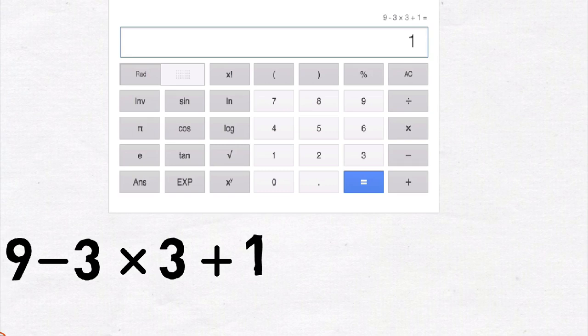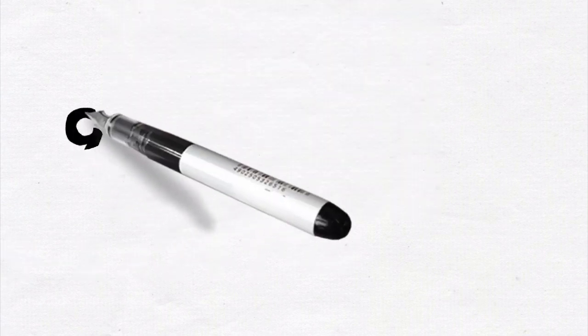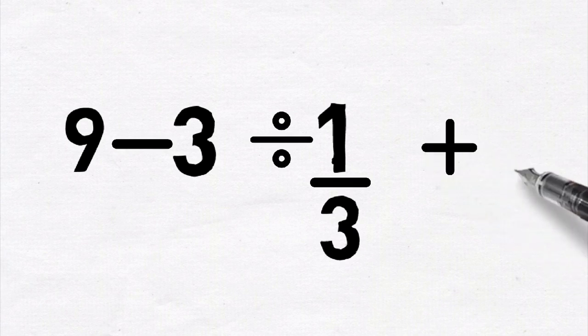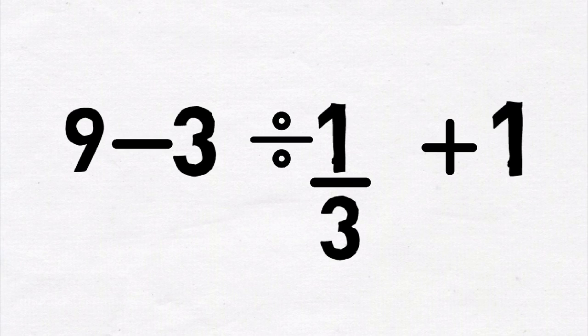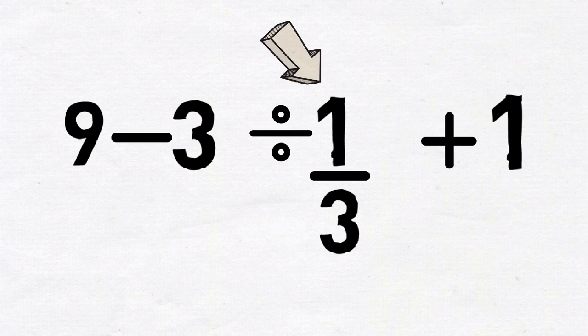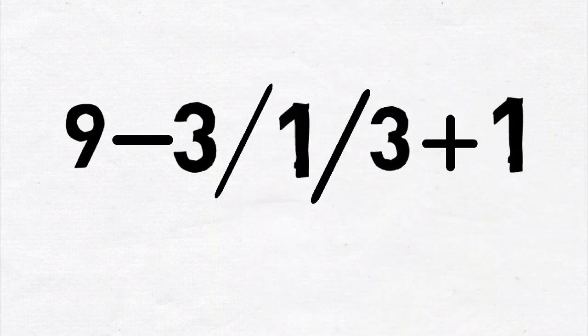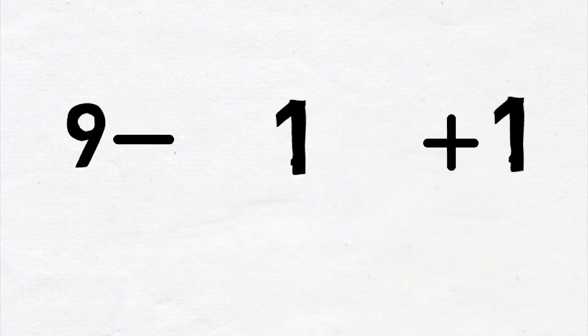So why did we get a different answer the first time? To answer this question let us quickly revisit the original problem. So here is our original problem once again. When we entered this problem into the calculator for the first time, the calculator did not understand that the fraction, which is one-third, needed to be grouped together. So it calculated the value of three divided by one divided by three, which gave us one, and which is incorrect.